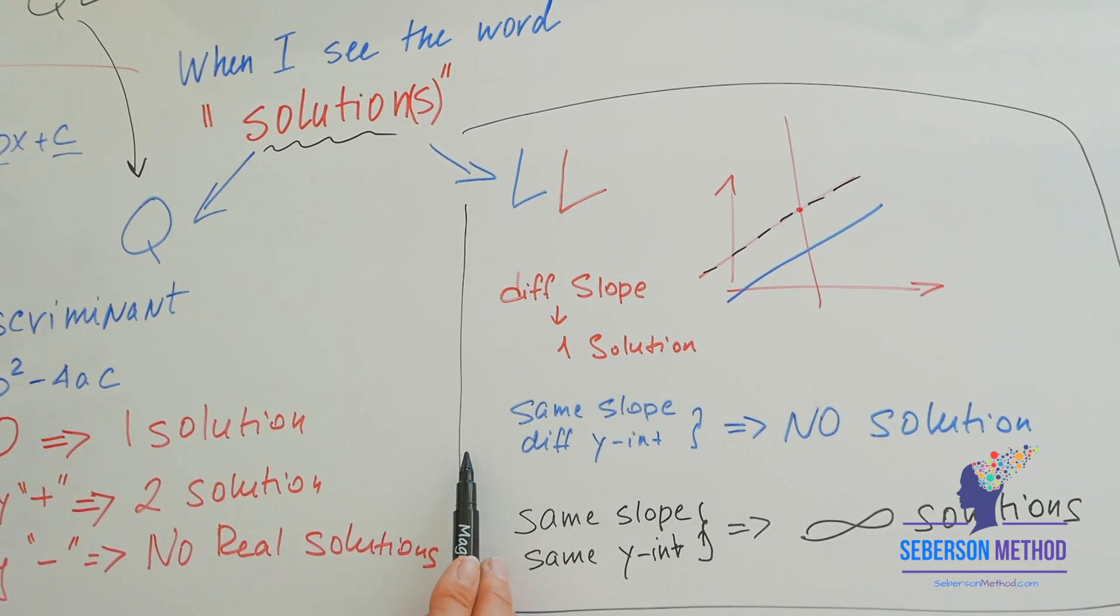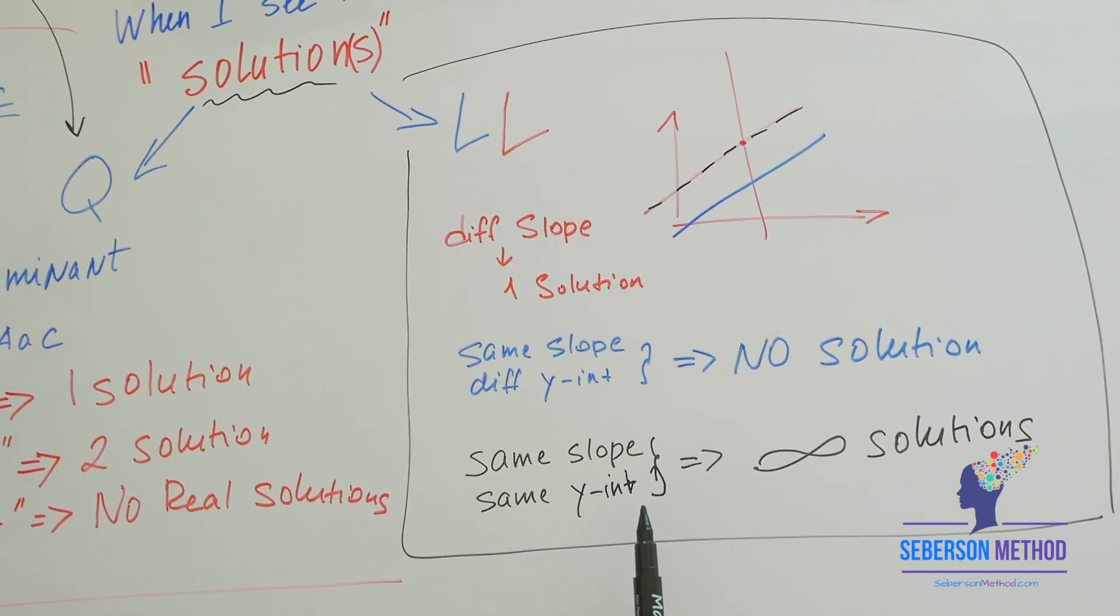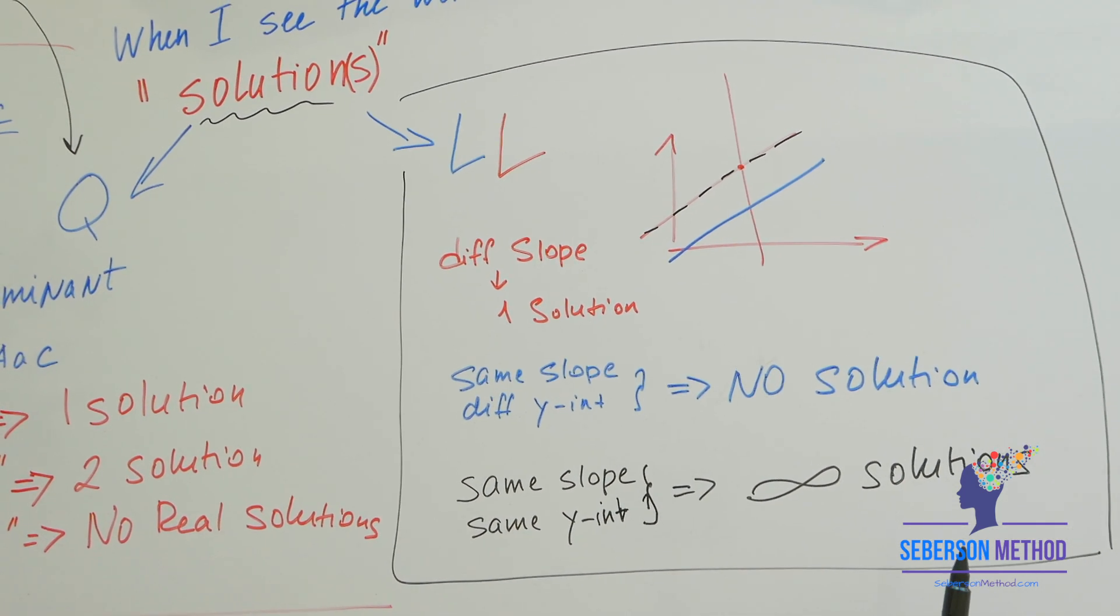Different slope, one solution. Same slope, different y-intercept, no solution. Same slope, same y-intercept, infinitely many solutions.